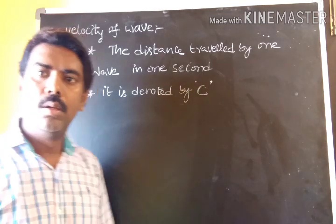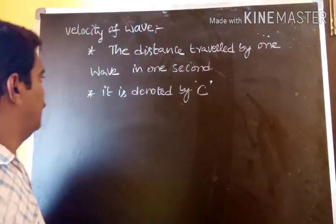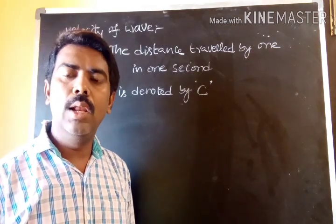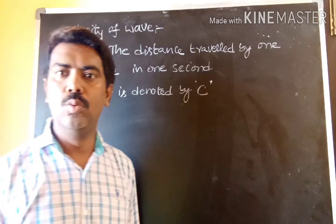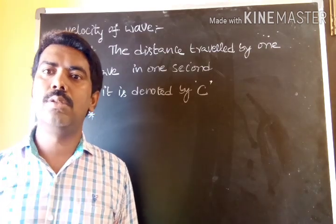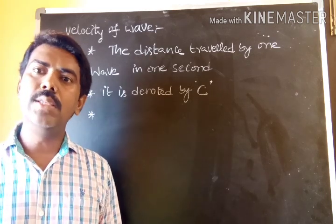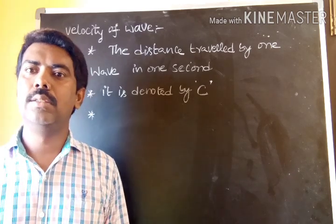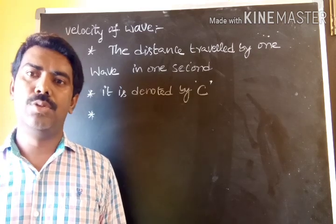The representation of velocity of wave takes place by capital C. All electromagnetic radiations travel with a velocity equal to the velocity of light. The different types of electromagnetic radiations include gamma rays, X-rays, ultraviolet, visible, infrared, microwave, and radio waves. All these radiations travel with a velocity equal to the velocity of light.